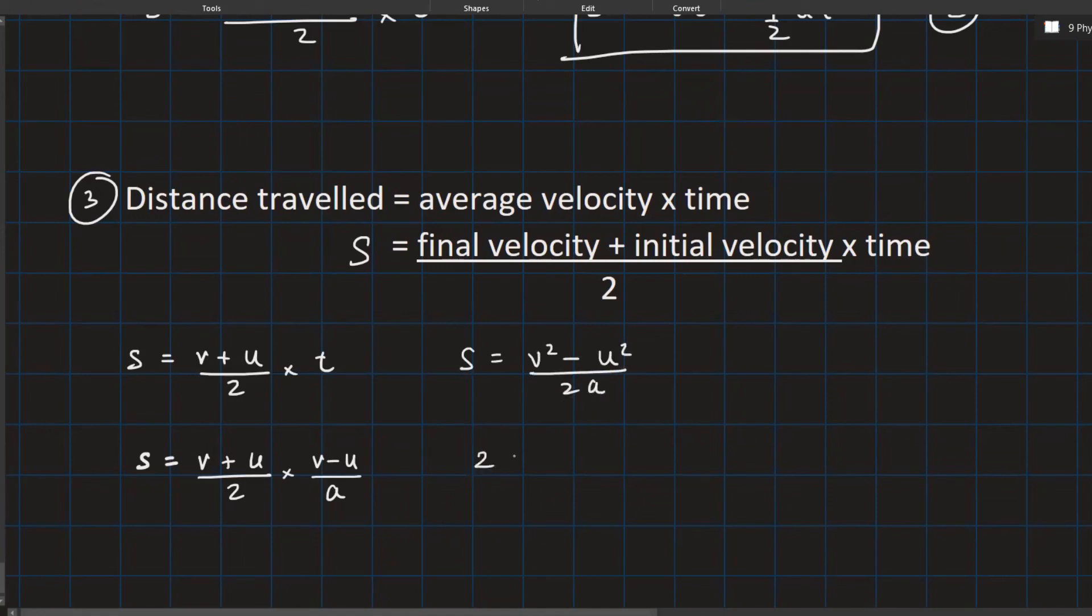I transferred 2a on the other side. You get 2as as v squared minus u squared. This also is taken on the other side. You will have u squared plus 2as as v squared. So we get v squared is equal to u squared plus 2as. And this is the third equation.